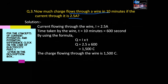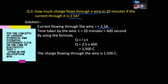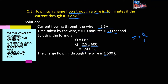Let us see the solution. Current flowing through the wire is 2.5 ampere. Time taken is 10 minutes; we convert it to seconds: 600 seconds. Using the formula I equals Q by T, rearranging gives Q equals I into T. So Q equals 2.5 into 600, which gives 1500 coulomb. The charge flowing through the wire is 1500 coulomb.